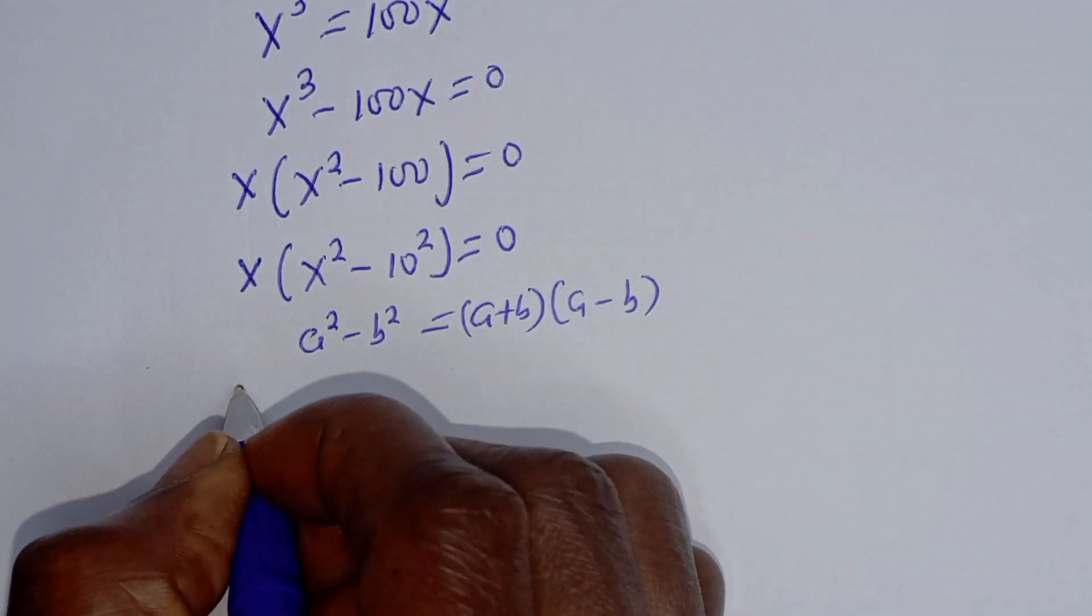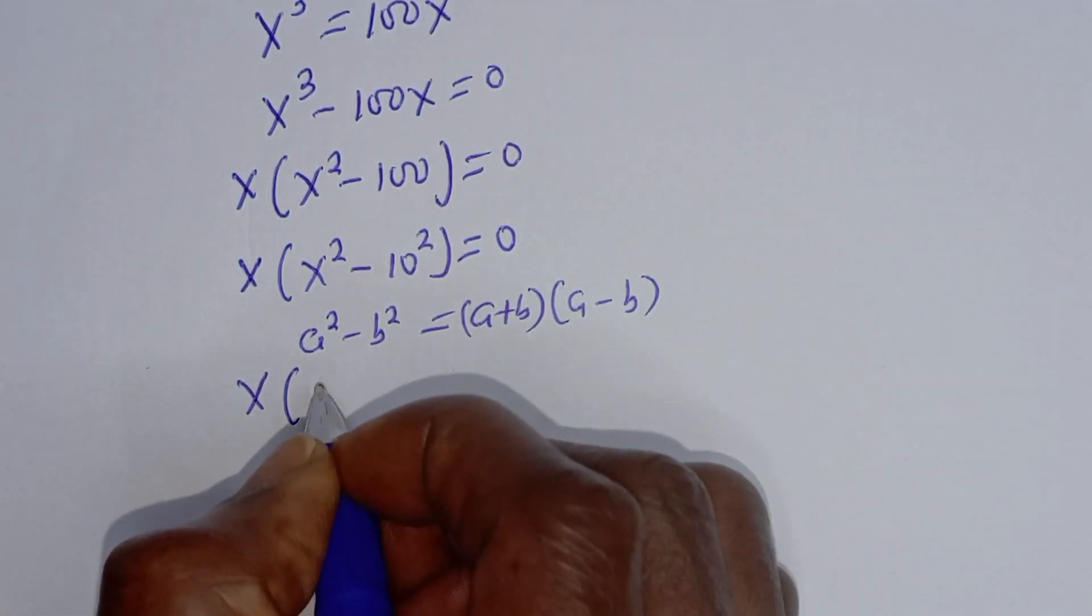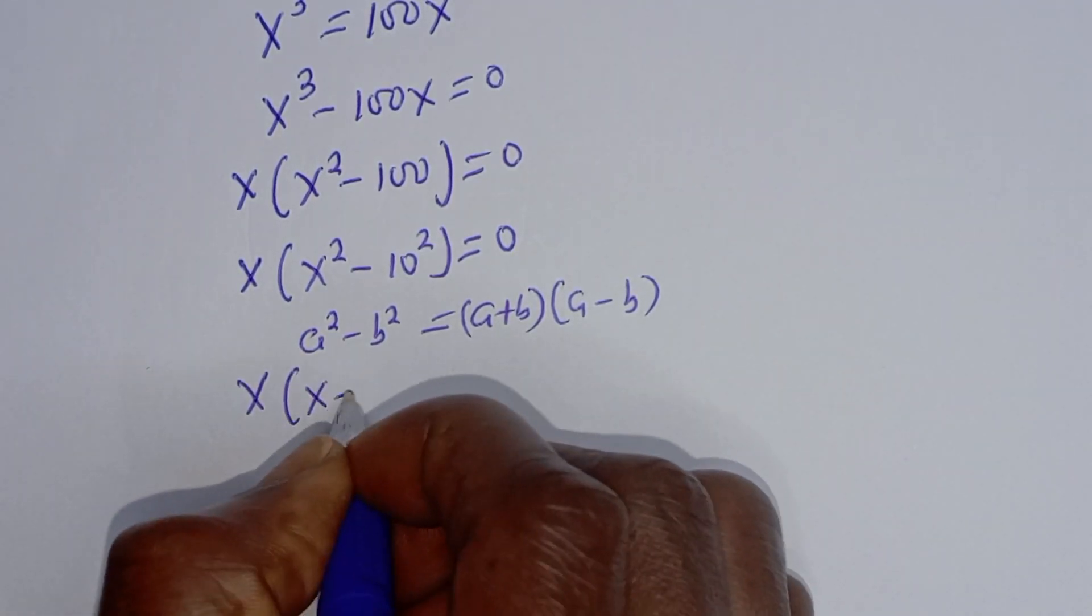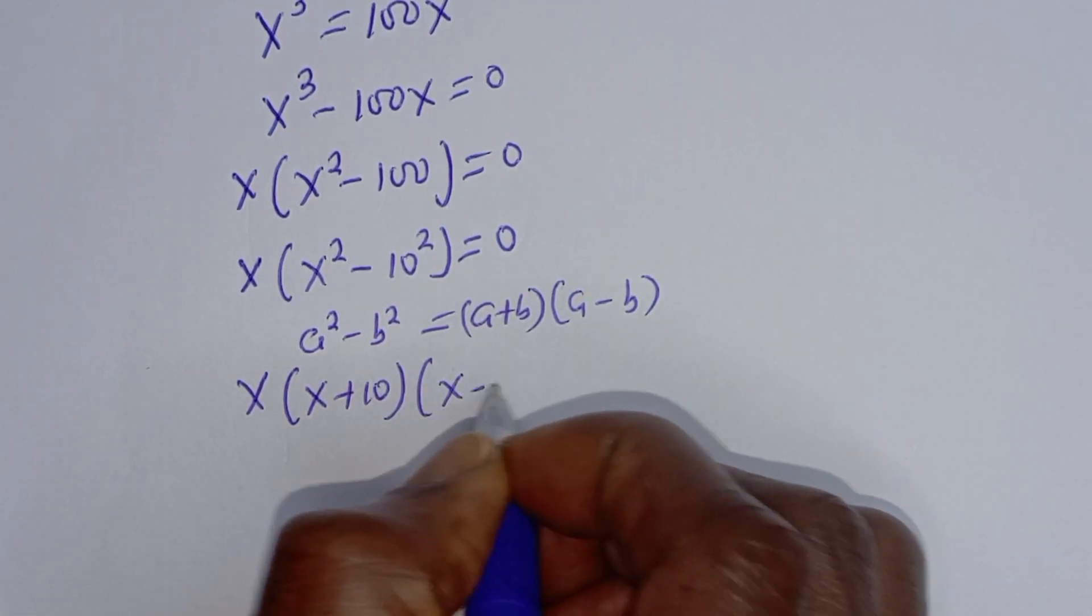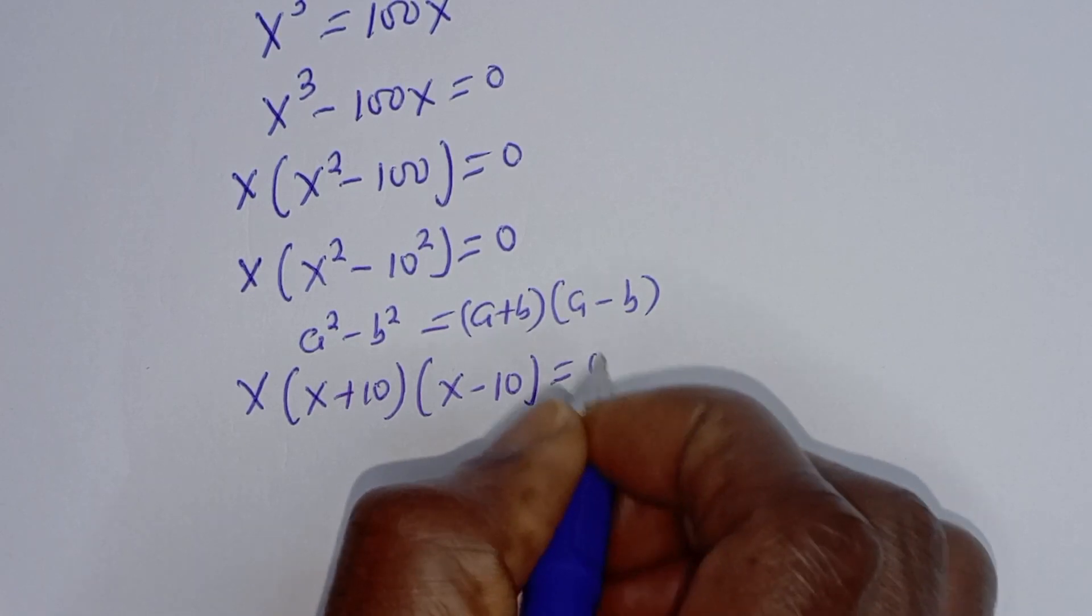Now let's substitute: x bracket x plus 10 bracket x minus 10 is equal to 0.